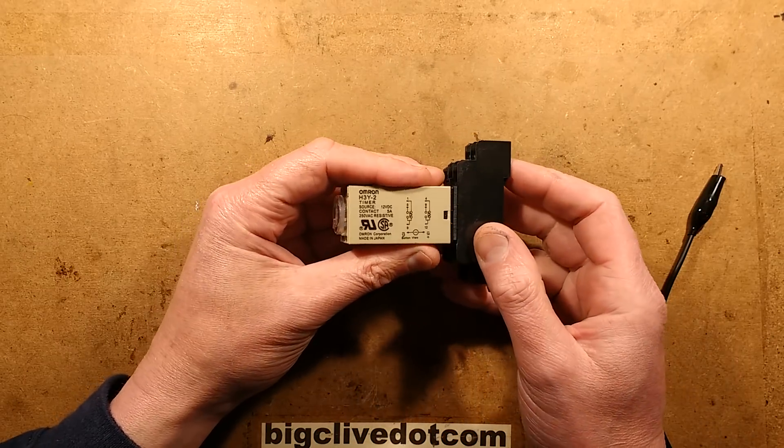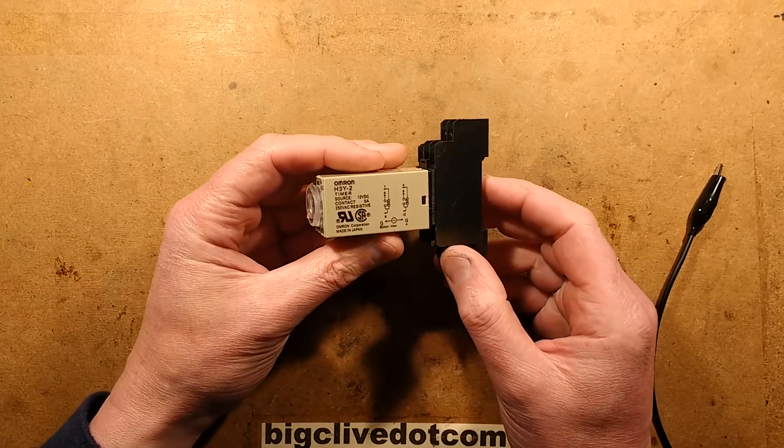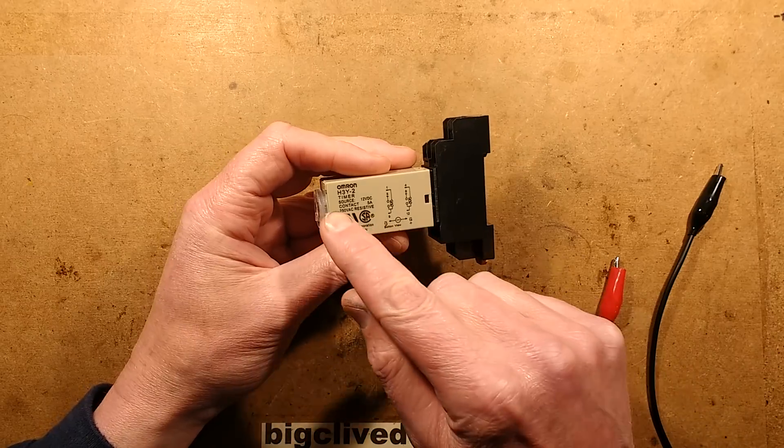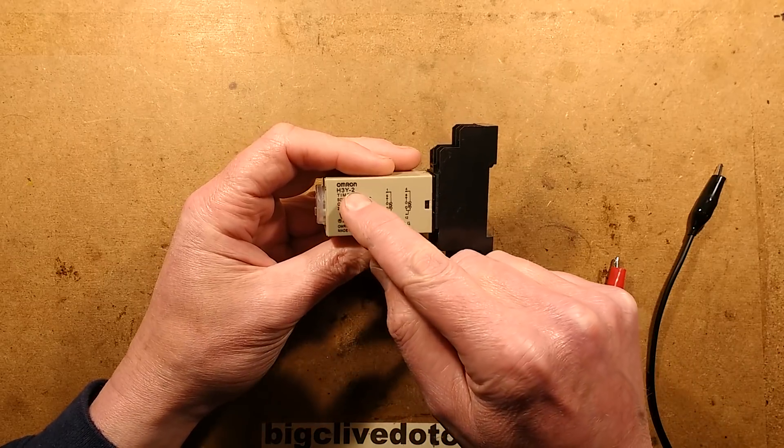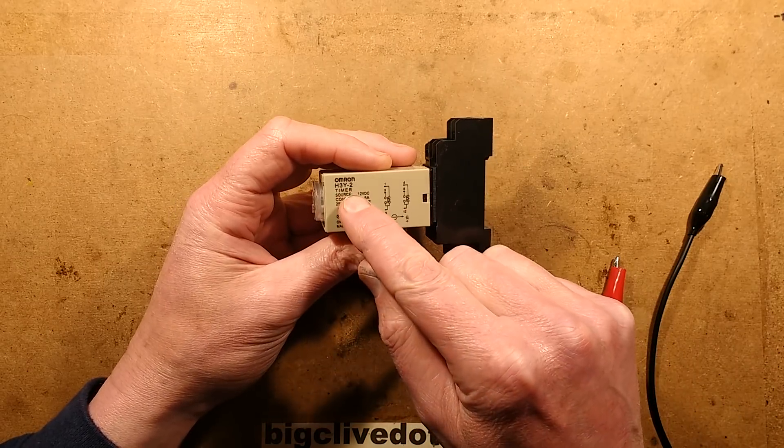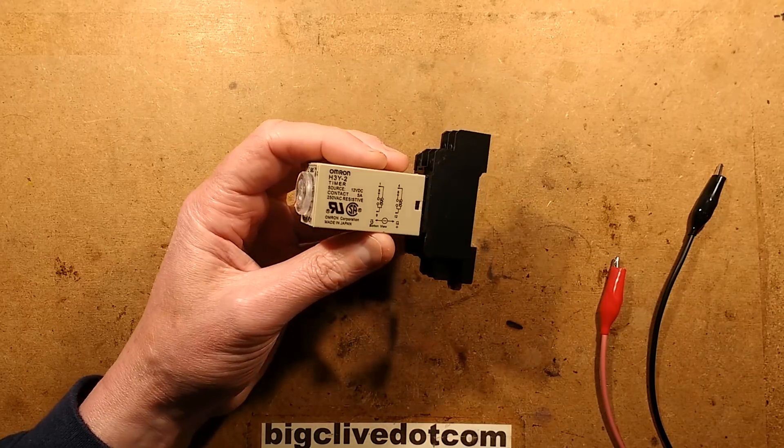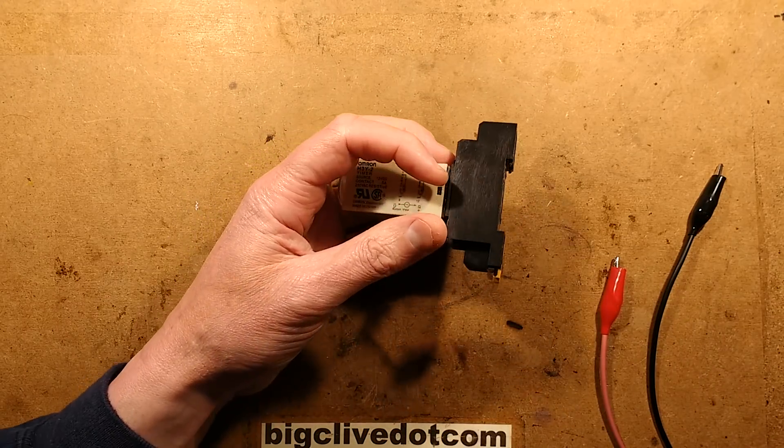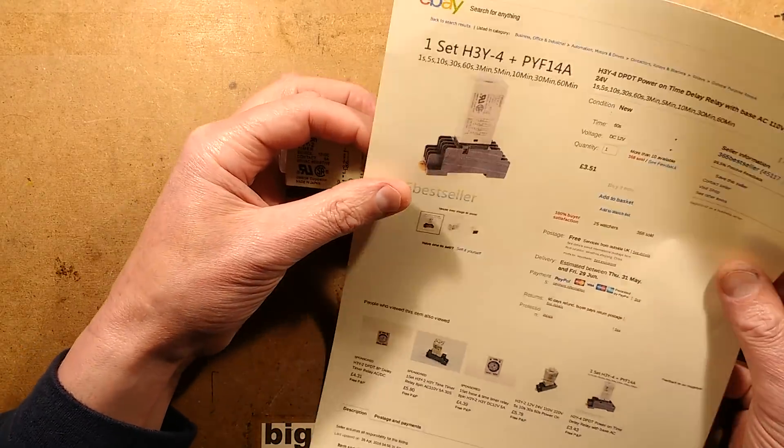Time for yet another handy Chinese industrial control module, and this time it's a fake Omron H3Y-2 timer. If you search for H3Y-2 timer you will find these. Not sure what listing I originally got this from but it was easy to find another one.